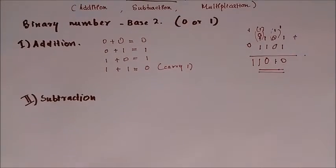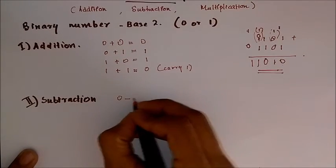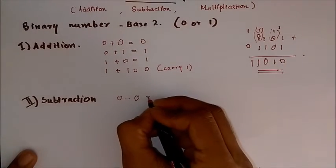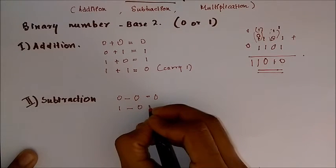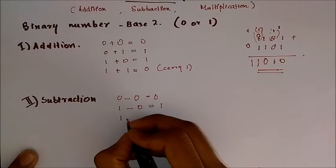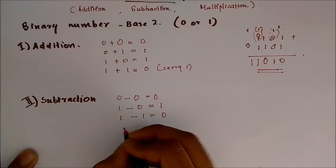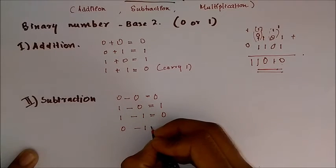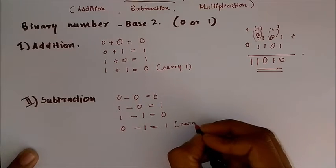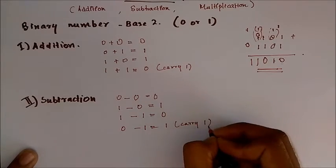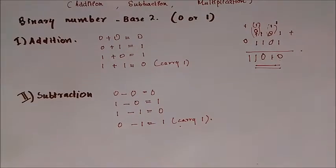Now the rules for subtraction are: 0 minus 0 gives 0; 1 minus 0 gives 1; 1 minus 1 gives 0; and finally, 0 minus 1 gives 1 with a carry 1. So this is the analogy.